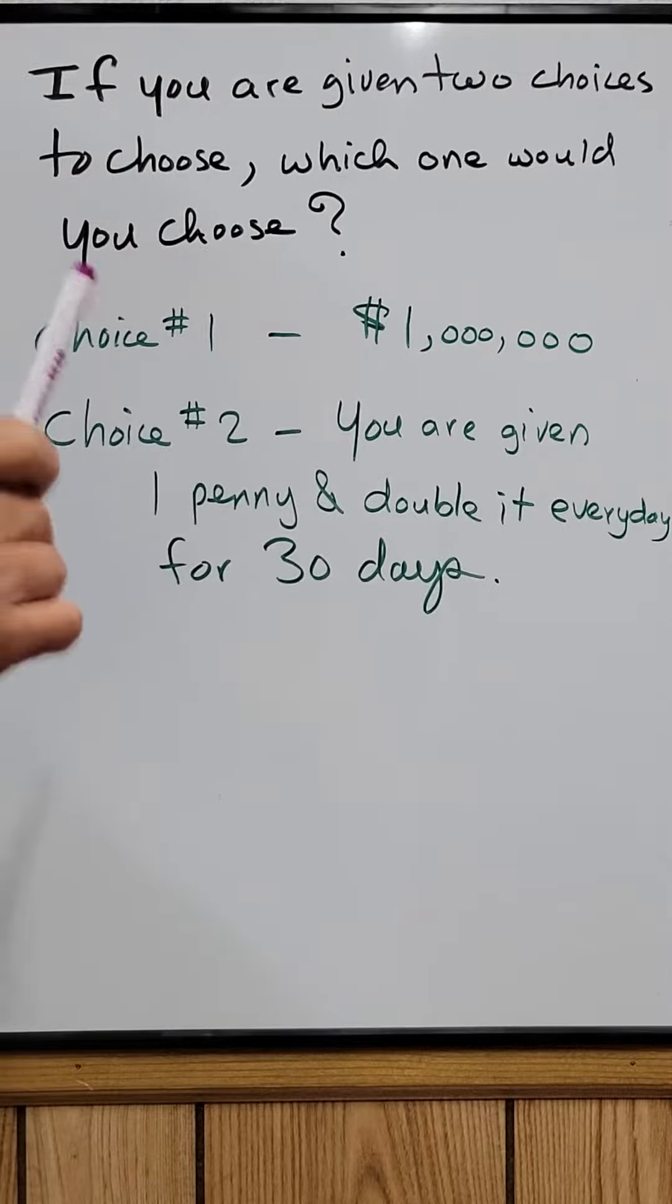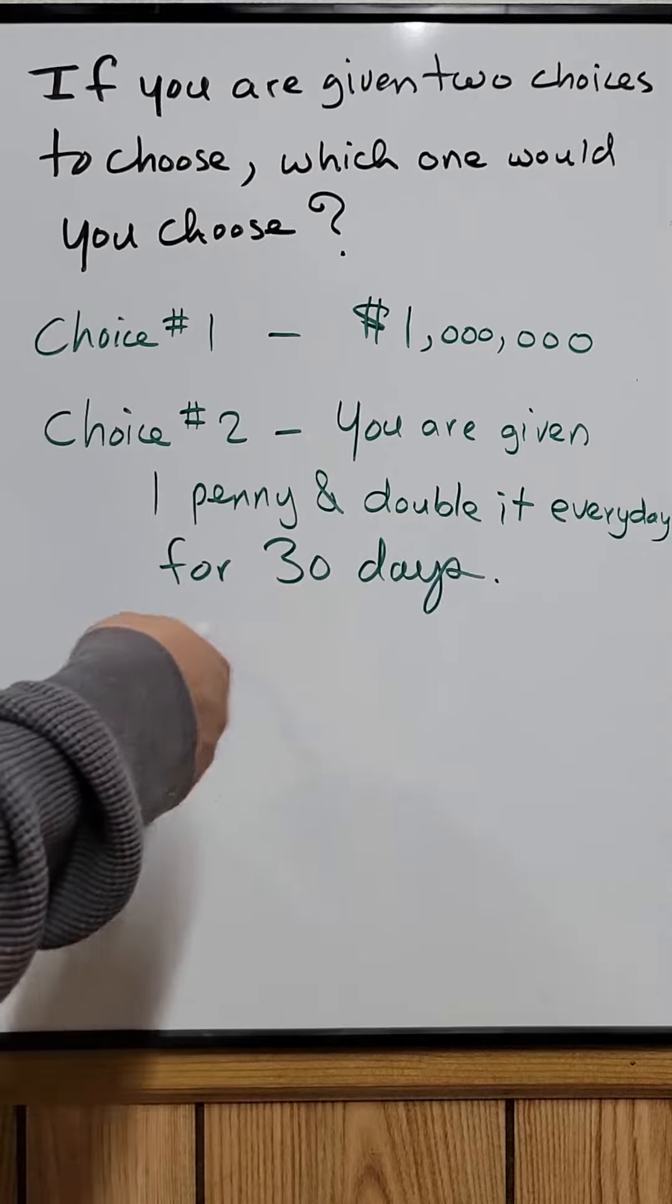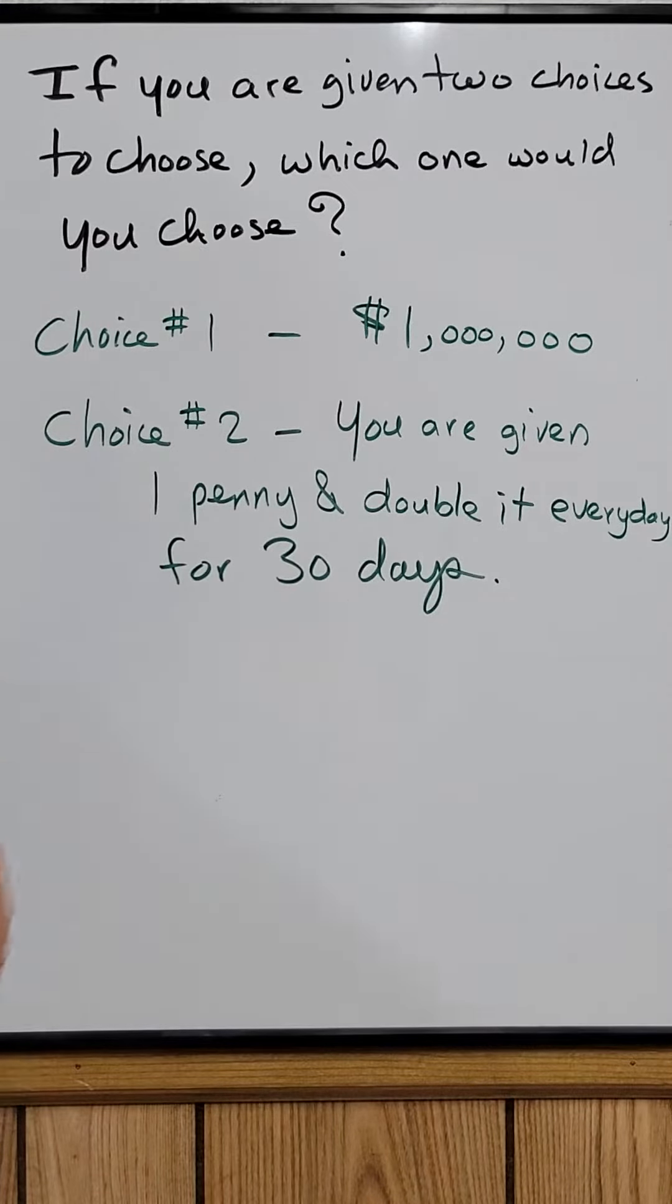...penny on day one and then double it every day for 30 days. So which one would you choose? Let me show you choice number two. Which one would be a better choice - would you take a million dollars right now or take choice number two?